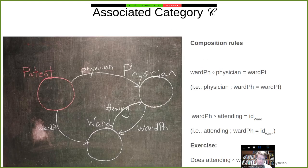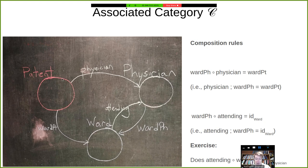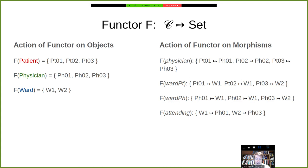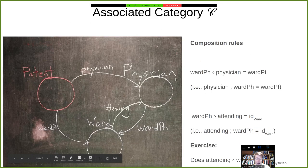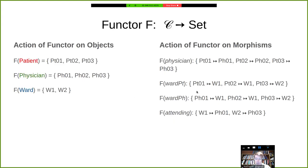The second thing a functor has to honor is identity: if it maps the identity on patient — a morphism that takes a patient ID and returns the same patient ID — that has to go to an identity function in Set. An identity morphism, which always exists for any given object even if not drawn, has to be mapped to an identity function. These composition and identity rules are guaranteed to be preserved as a key part of being a functor. To be a legitimate functor, you have to preserve composition and identity.